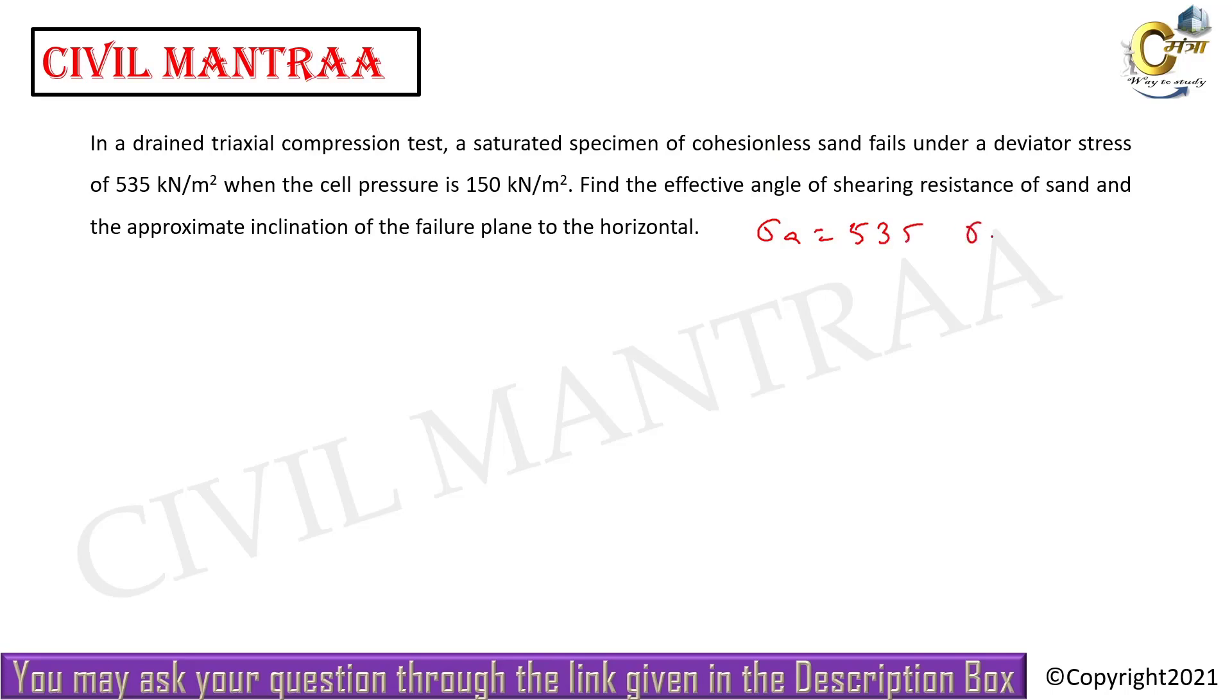535 and sigma 3 given as 150. So what is sigma 1? Sigma 1 is equal to 685 kilonewtons per meter square. Okay, so you have a drained triaxial test and it is cohesionless soil, sand.